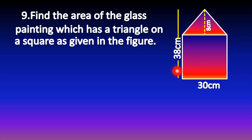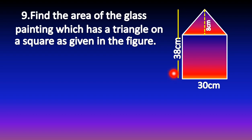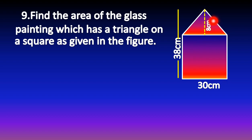These are the measurements of the given shape. The side of the square is 30 cm, and the total height of this painting is 38 cm. Since the square side is 30 cm and total height is 38 cm, the height of the triangle is 8 cm.